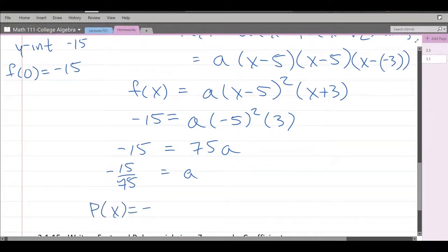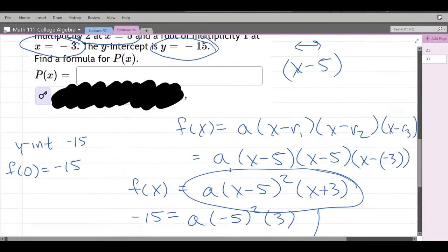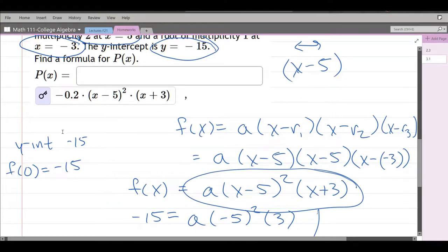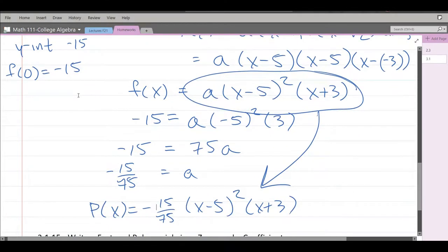We had, I'm copying off this right here, just plugging in the a value. Negative 15 over 75 times x minus 5 squared times x plus 3. And here we go. That negative 0.02 should be that number right there. Fraction or decimal should work either way.